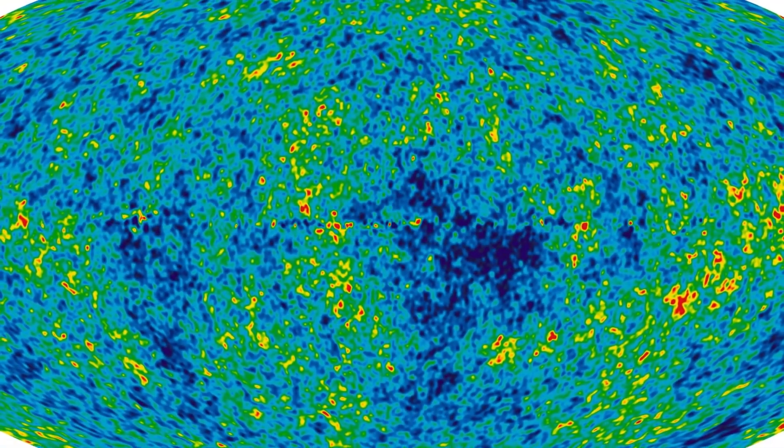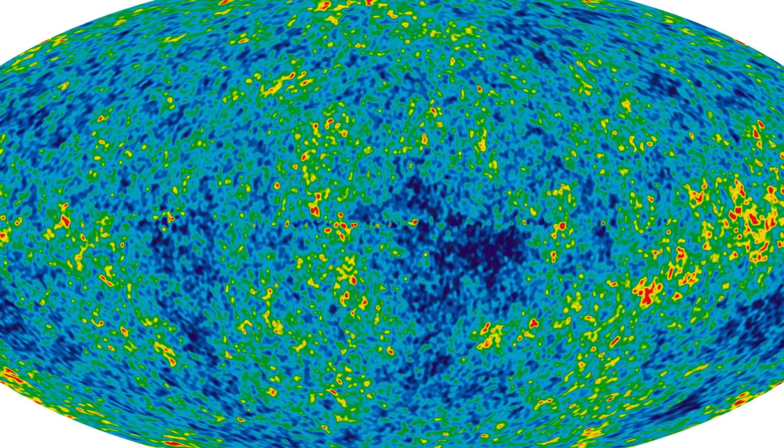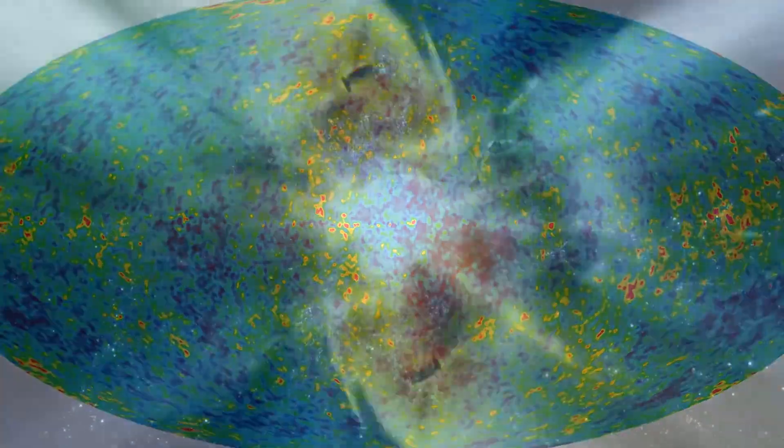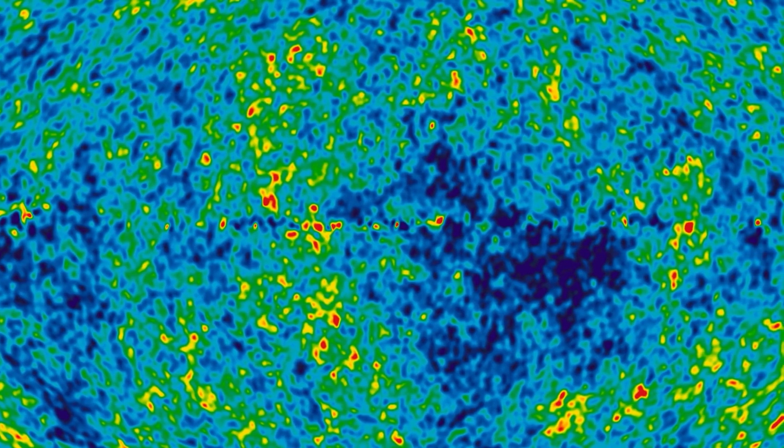This microwave energy comes from when the universe was only 380,000 years old. Astronomers can determine the age of the universe and its expansion rate by measuring the tiny ripples of temperature and polarization emitted by the CMB.